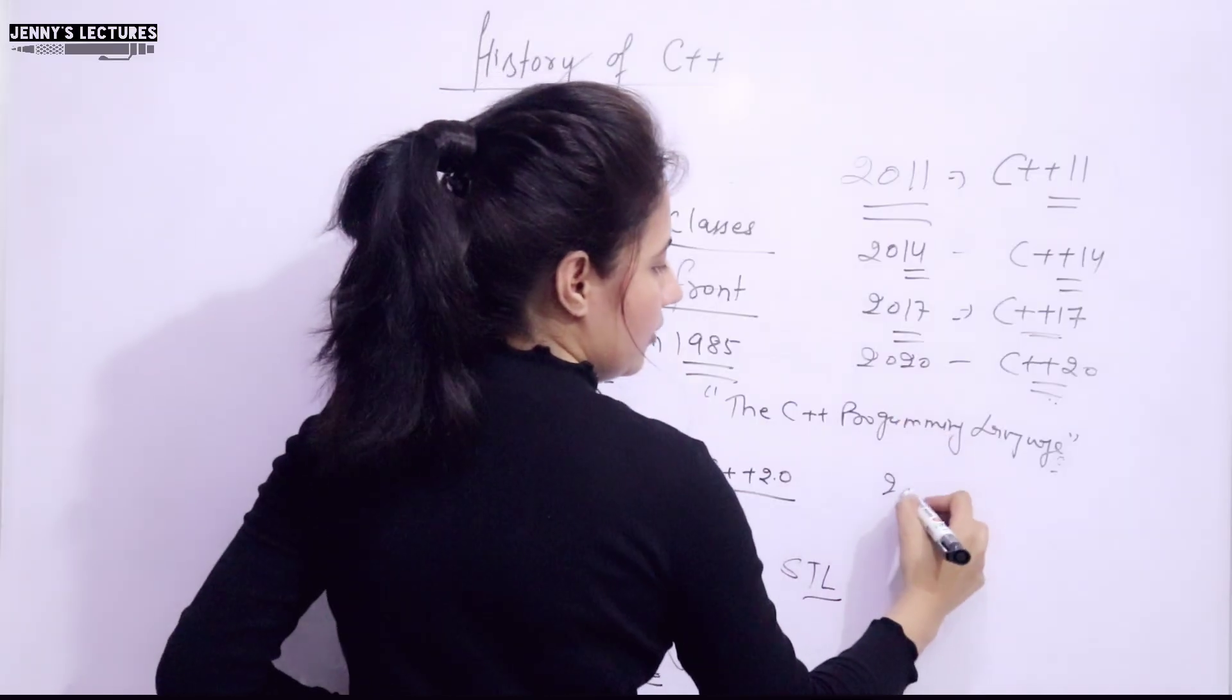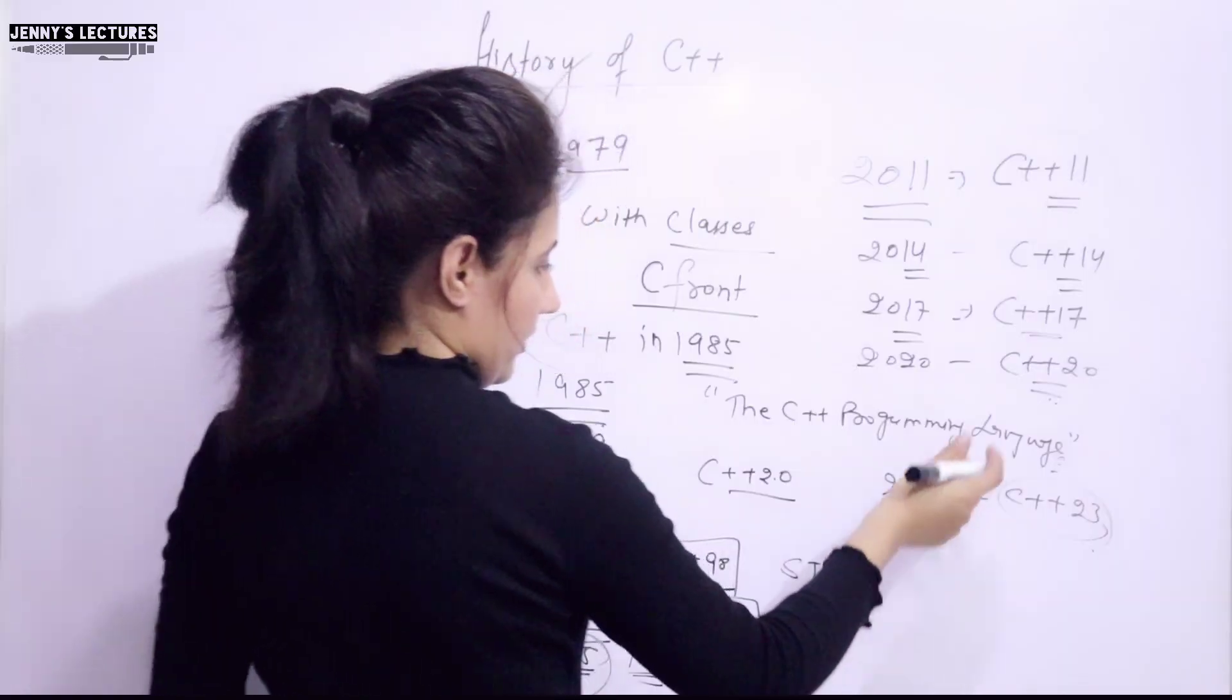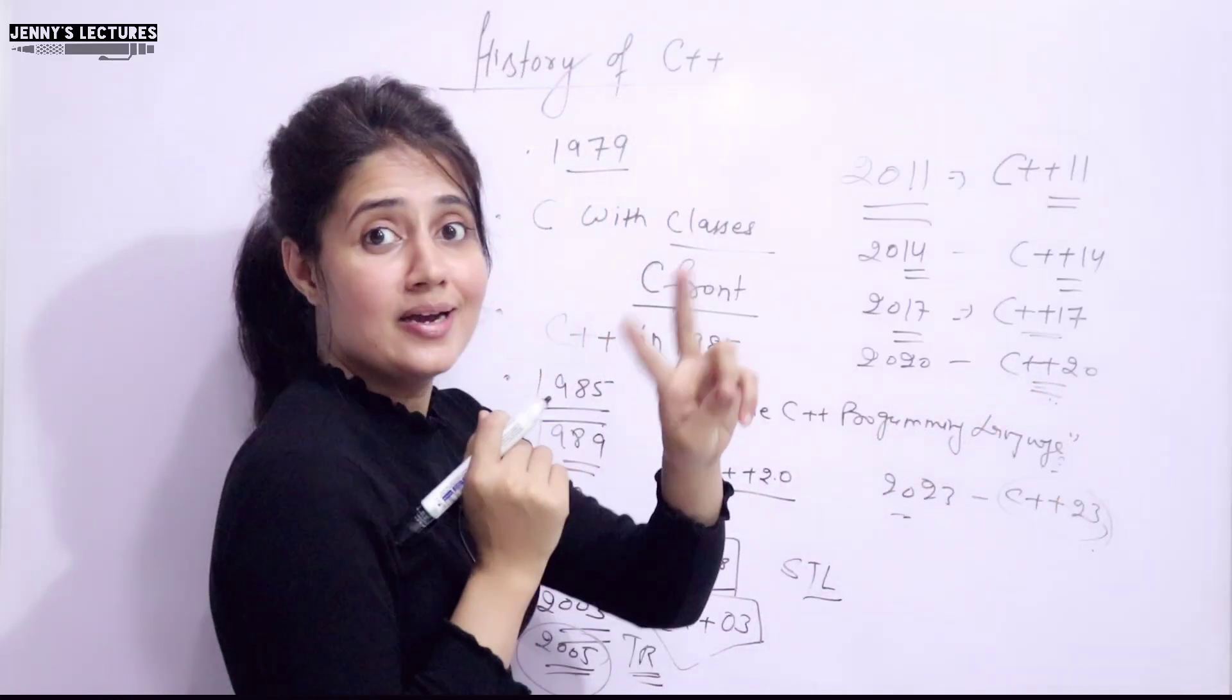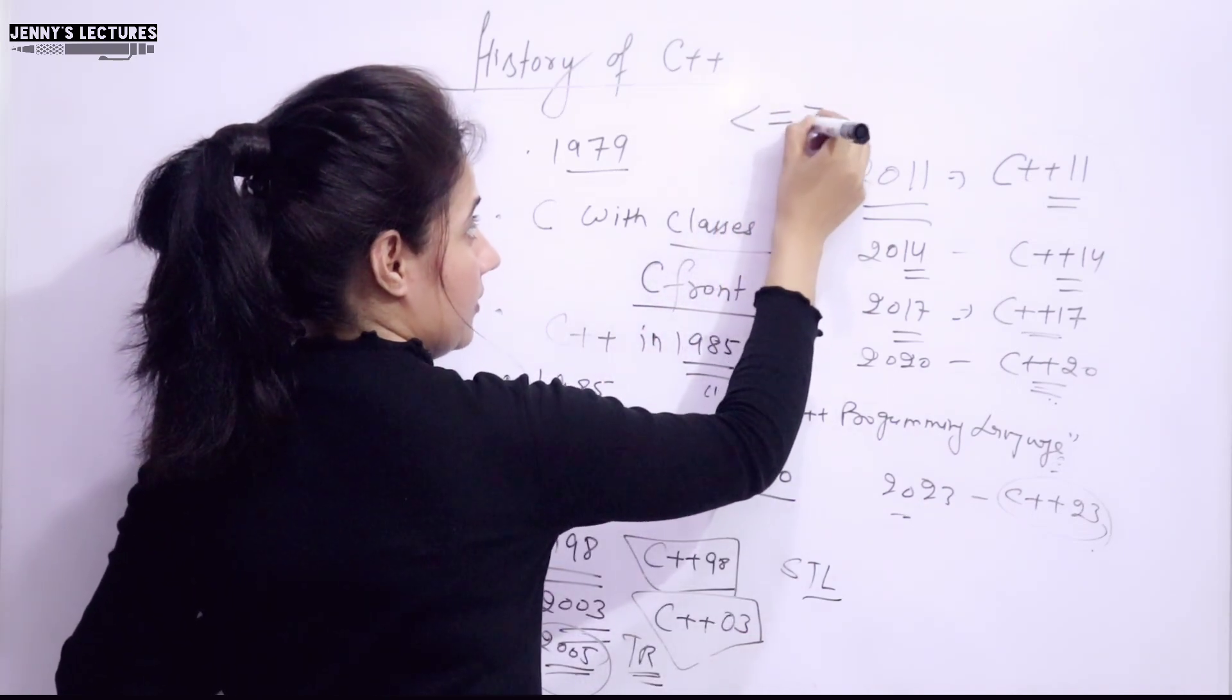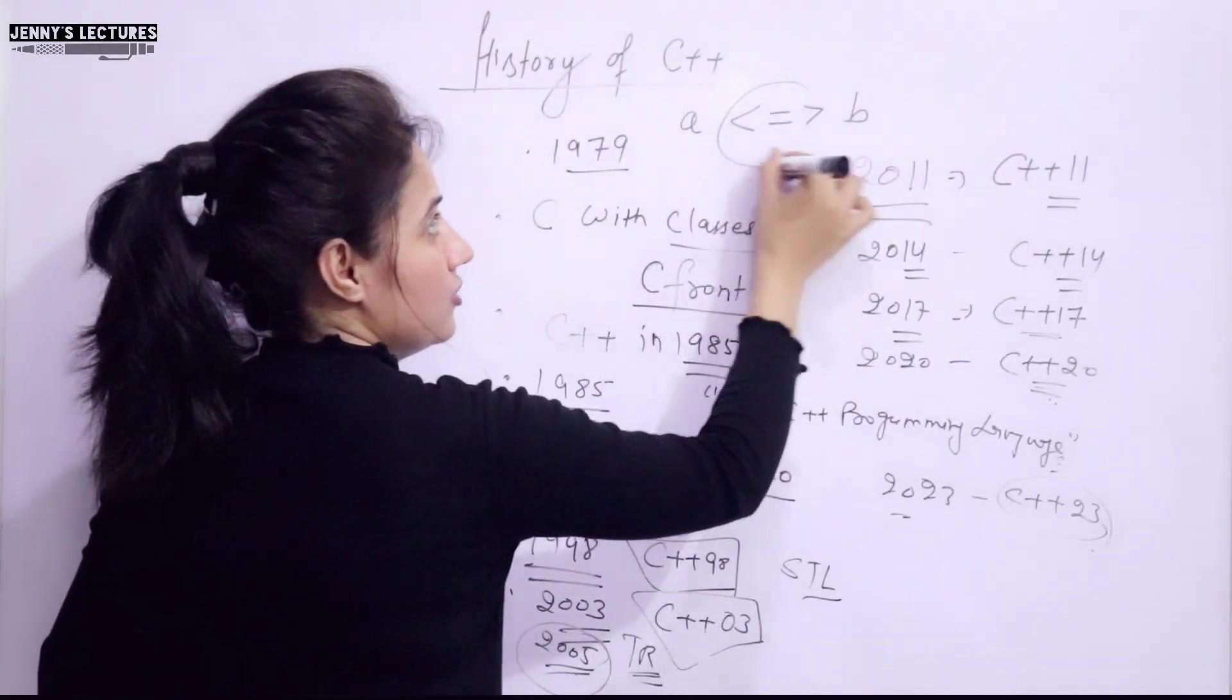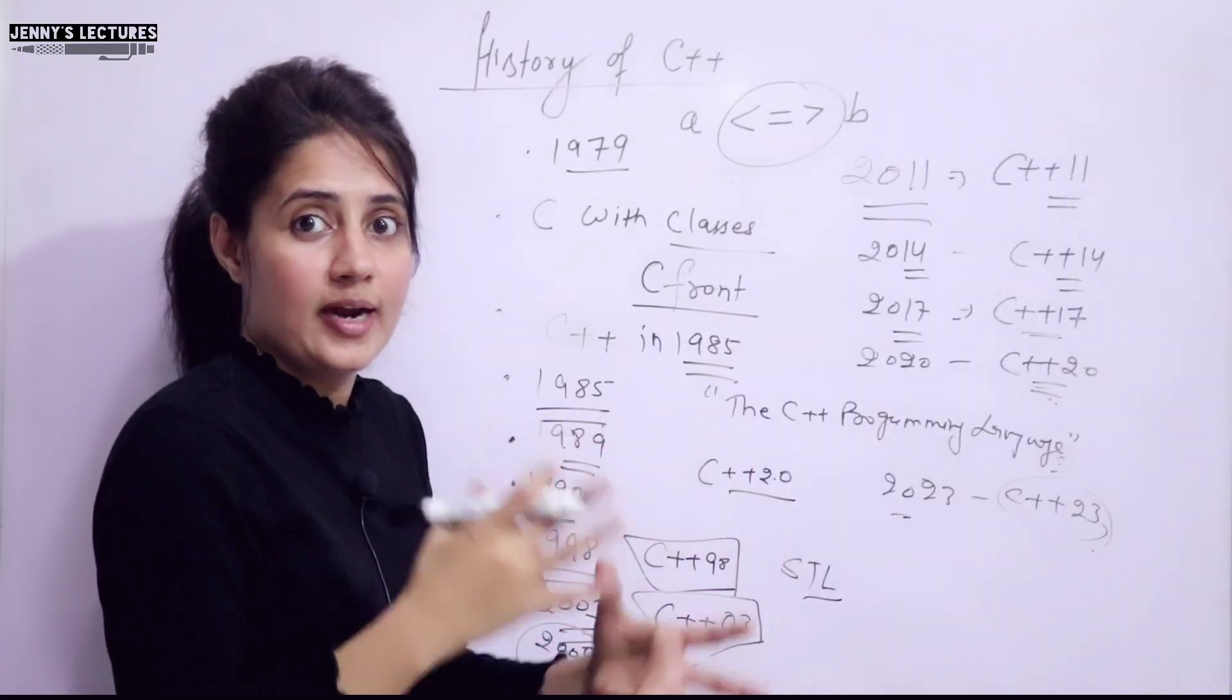Next will be coming in 23. That would be named as C++ 23. Like in this, they have added new features. One example is they have added a three-way comparison operator. This is the operator. If you can write, this and this. A, this operator is known as three-way comparison operator. So, many of these kinds of features were added.